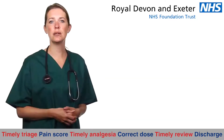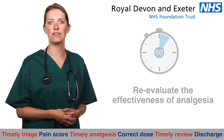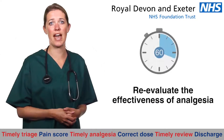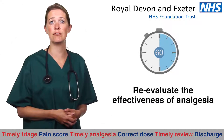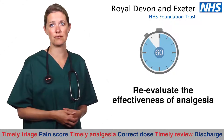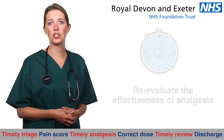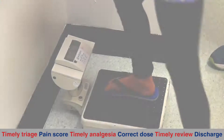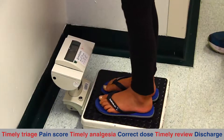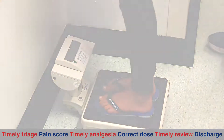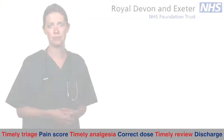Children in pain should have the effectiveness of their analgesia re-evaluated within 60 minutes of the first dose. Weigh the child as soon as possible, especially if initial drug doses were calculated on an estimated weight.